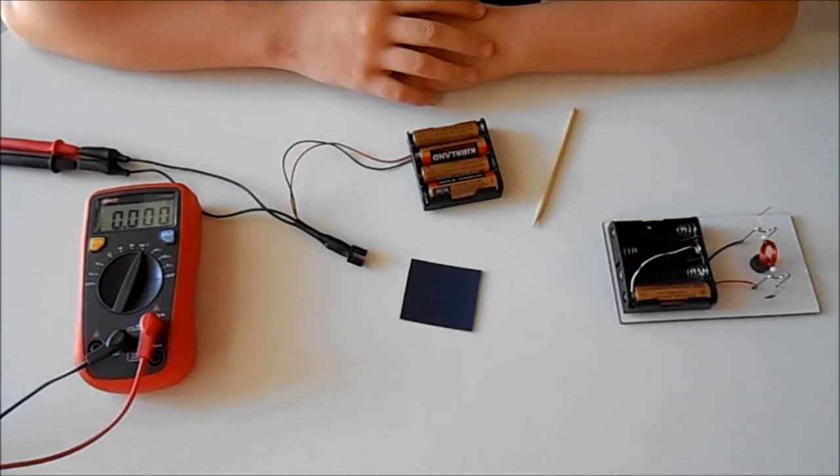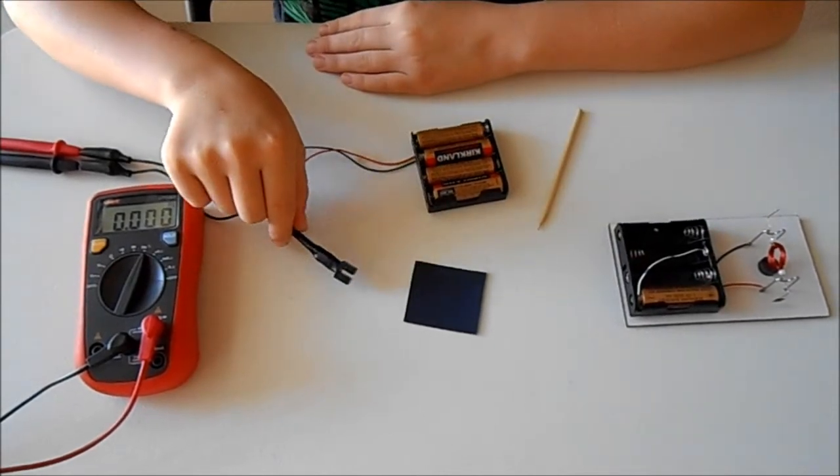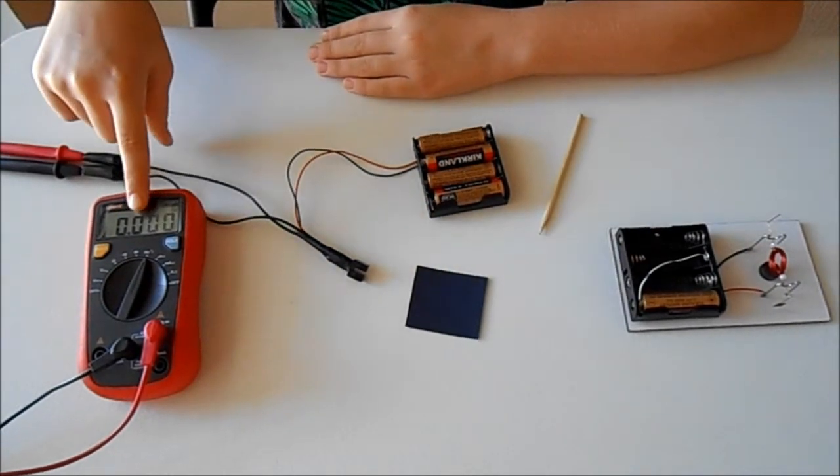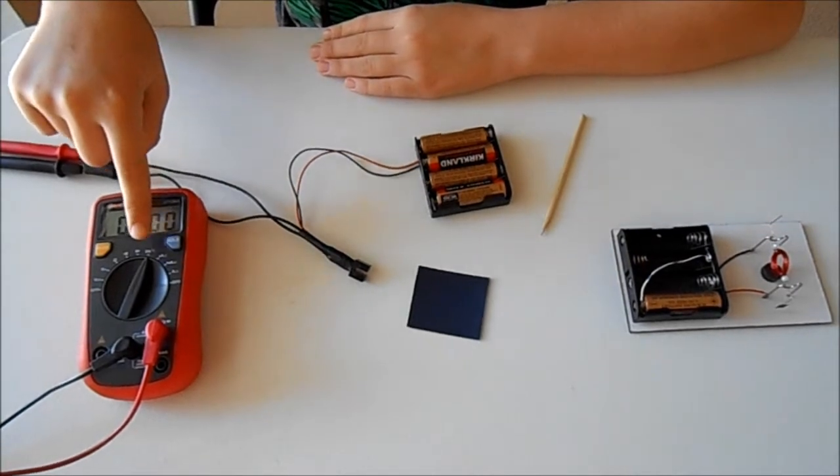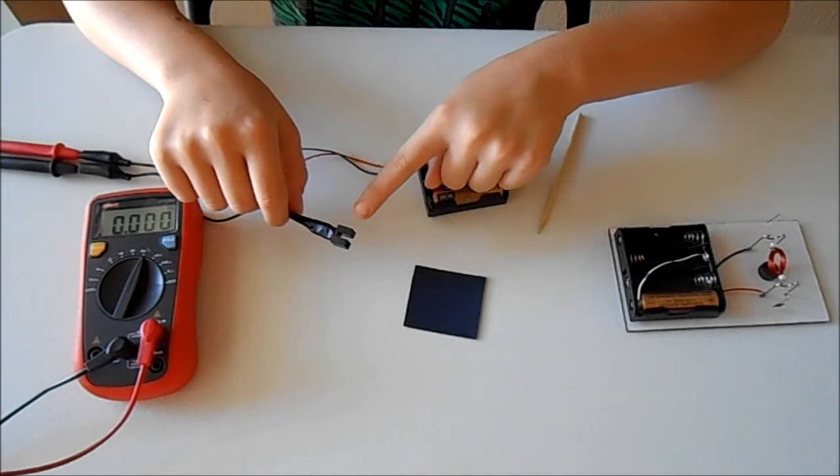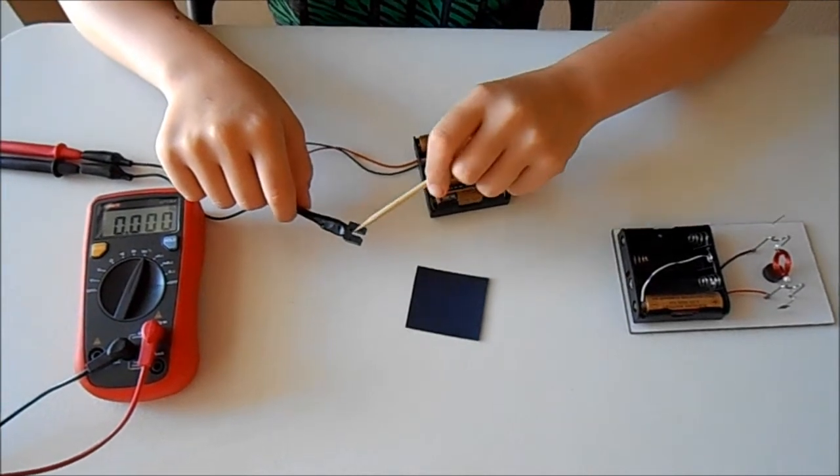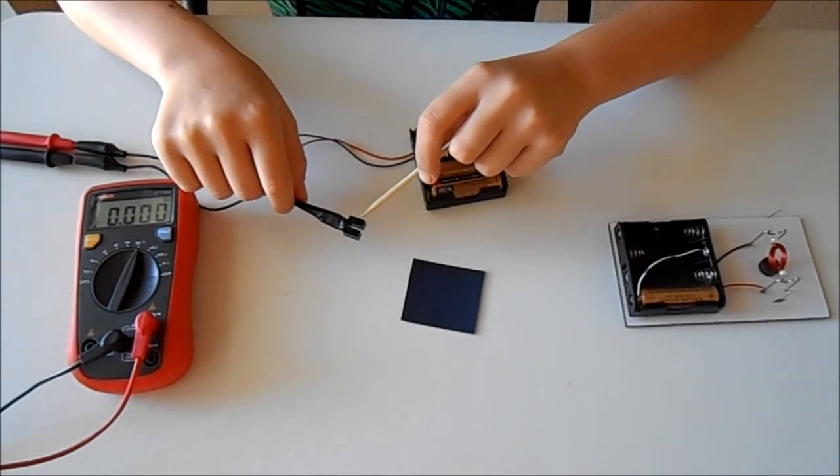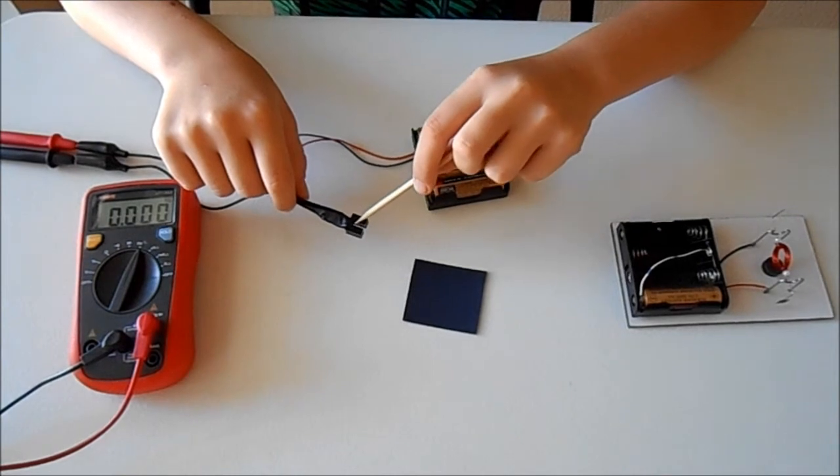To measure the rotational speed we will use a special attachment connected to the multimeter in frequency measurement mode. This attachment has an optical sensor or opto interrupter. There is an LED, photo transistor, and a slot between them.